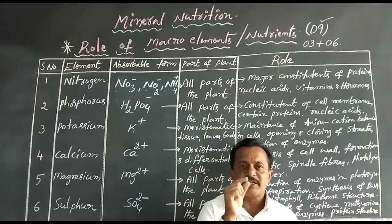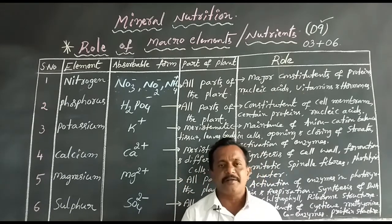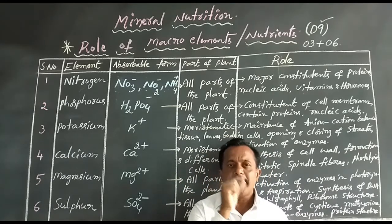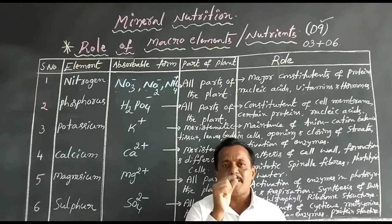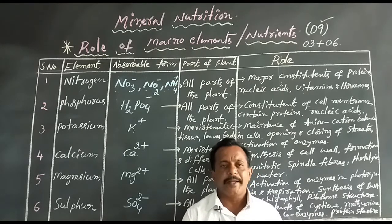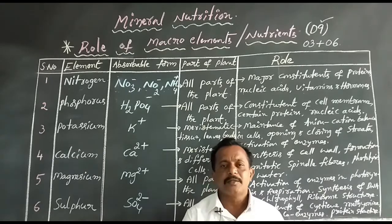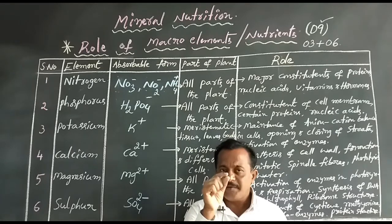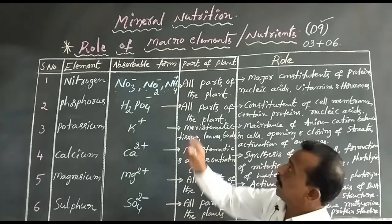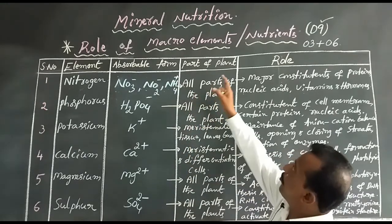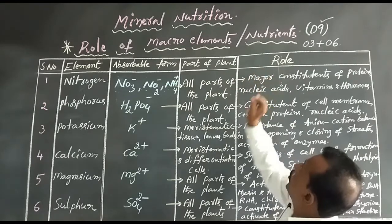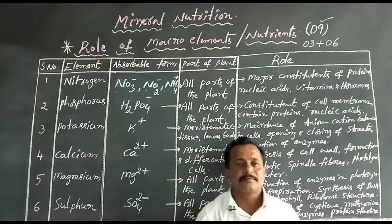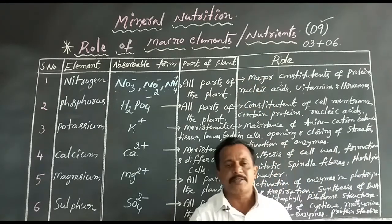There are 17 essential elements in total. Of these, 9 are macro elements or macronutrients, and 8 are micro elements or micronutrients. Today we will discuss the role of macro elements, that is, macronutrients.